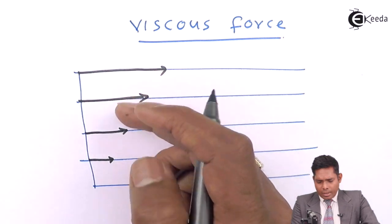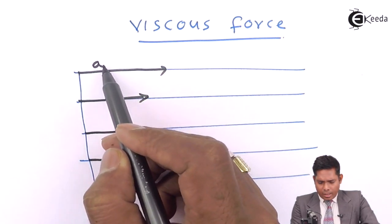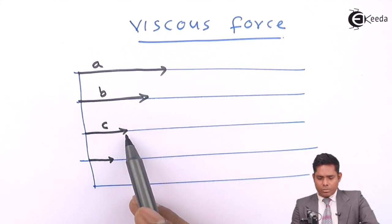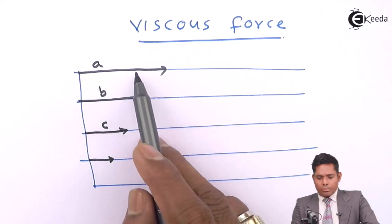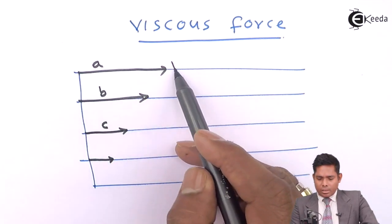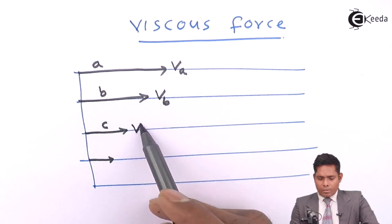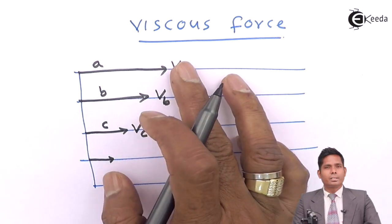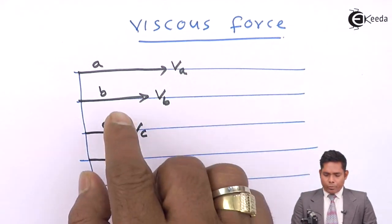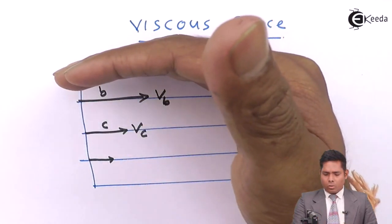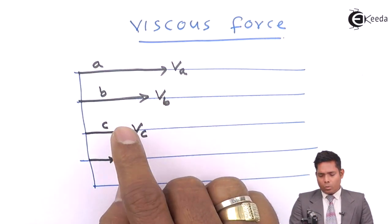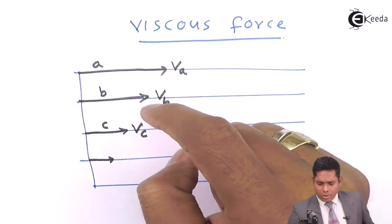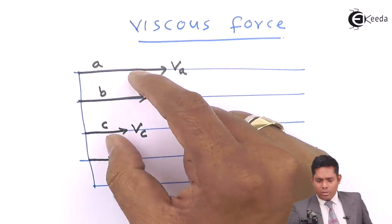Now, I say this layer is named A, this one is B, and this one is C. When B moves, it is moving faster with respect to C but slower with respect to A. Suppose this velocity is VA, this velocity is VB, and this velocity is VC. This layer B is moving with velocity VB, which is greater than VC and less than VA. So when this slides between the upper and lower surfaces, the lower surface is moving slower and the upper surface is moving faster. This will exert a force on both the surfaces.